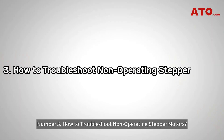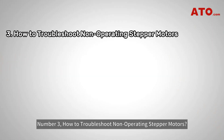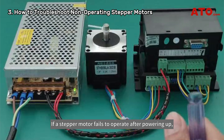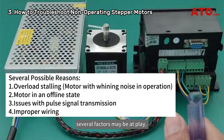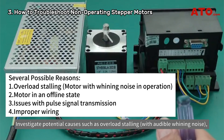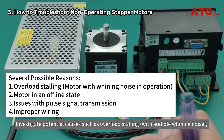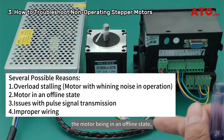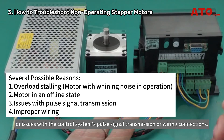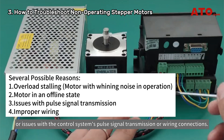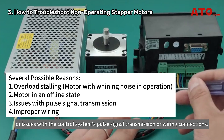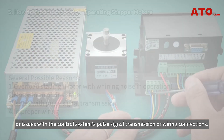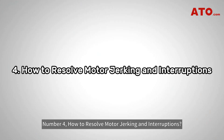Number three: how to troubleshoot non-operating stepper motors. If a stepper motor fails to operate after powering up, investigate potential causes such as overload stalling with audible whining noise, the motor being in an offline state, or issues with the control system's pulse signal transmission or wiring connections.